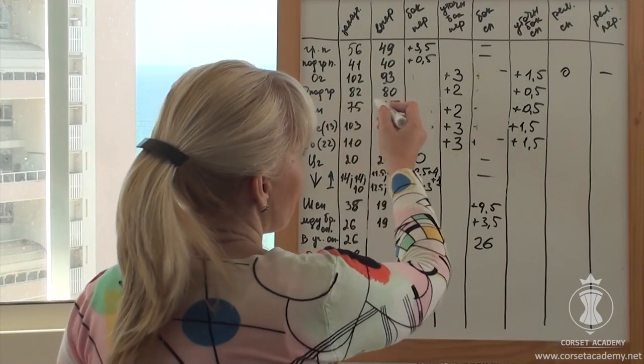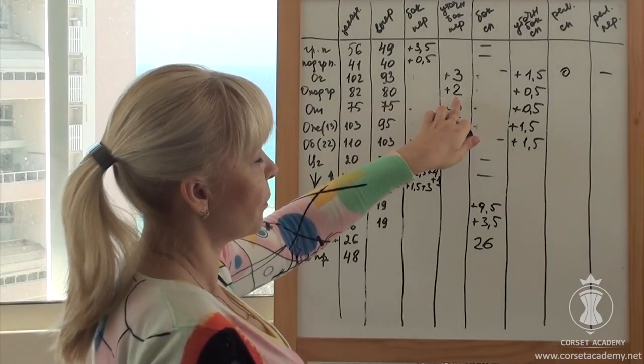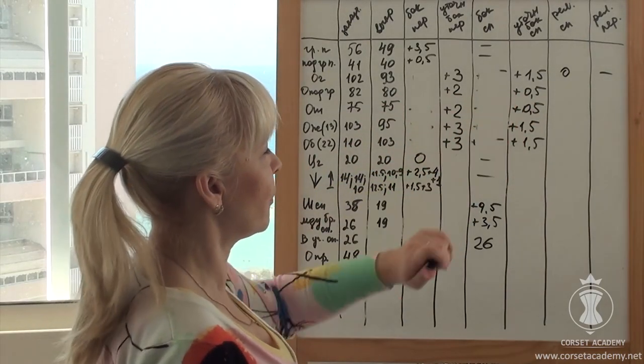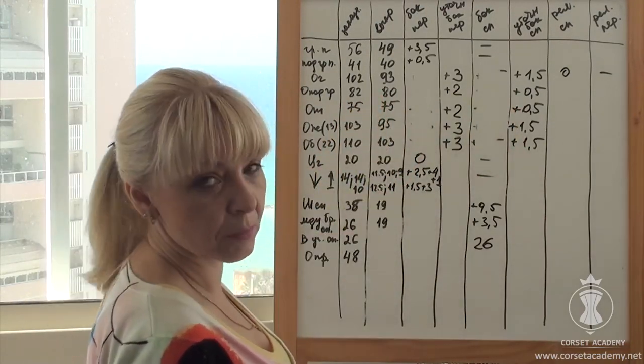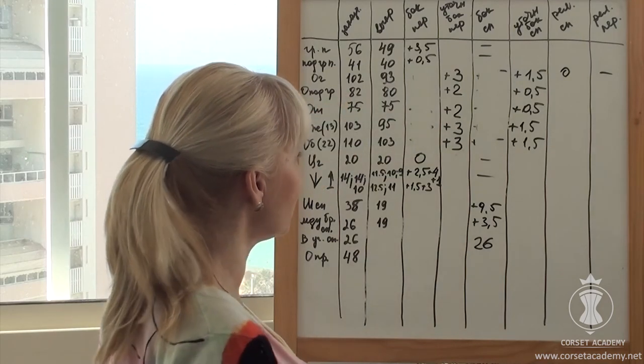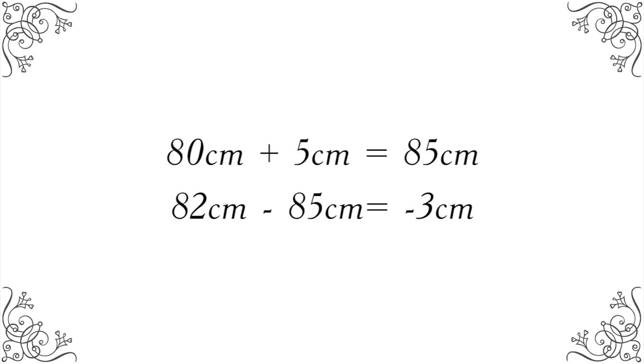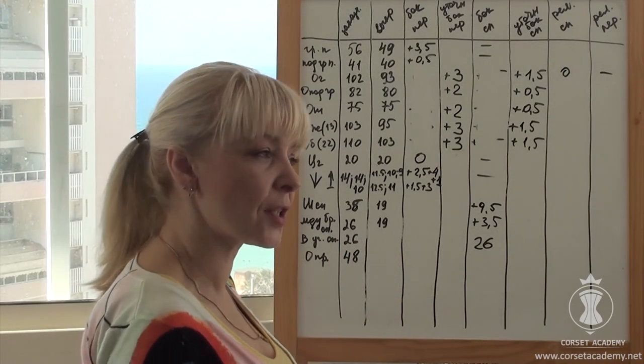Under bust circumference. It is 82 cm on the client and 80 cm on the pattern. We have expanded the pattern by 2 cm from each side, a total of 4 cm, and by 0.5 cm from each side, a total of 1 cm, which makes 5 cm together. 80 cm plus 5 cm equals 85 cm. 82 cm minus 85 cm equals negative 3 cm. There are 3 extra cm that need to be removed from the pattern.